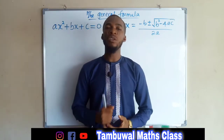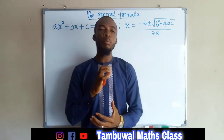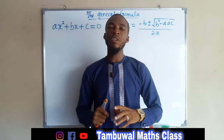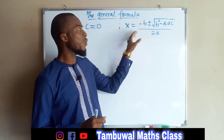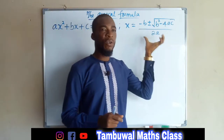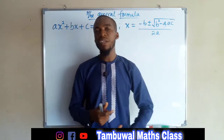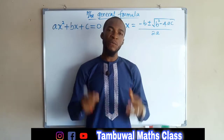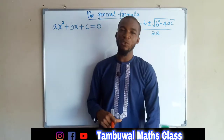In our previous lesson, we used the completing the square method to solve quadratic equations, which is very important when you cannot factorize a quadratic equation. Apart from this completing the square method, there is a general formula for solving quadratic equations, given as x equals negative b plus or minus the square root of b squared minus 4ac, all divided by 2a. Using the formula to solve quadratic equations is directly related to the completing the square method because the formula itself is derived from it. In this tutorial, I'm going to show you how we derive this general formula.